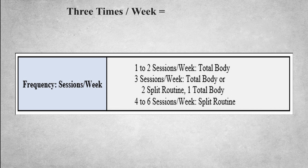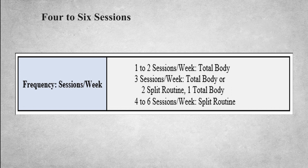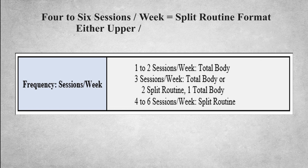If it's three sessions per week, it can either be three total bodies, or it could be two split routines and one total body. For example, lower body on Saturday, upper body on Sunday, and then either on Tuesday, Wednesday, or Thursday, doing a light total body. But once you get to four, five, or six sessions per week, then you no longer want to train total body. At that point, you should be splitting it up into what's called split routine format, where for example you could do two lower body and two upper body sessions if it's a four-day split, or you can split it up into push exercises in one session and pull exercises in another.